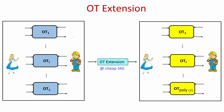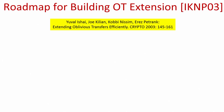Just to quickly recall, the goal of the oblivious transfer extension is the following: suppose sender and receiver are going to be involved in a polynomial of lambda number of OT instances. We want to get the effect of those OT instances by just executing lambda number of OT instances between Alice and Bob and performing some additional symmetric operations.